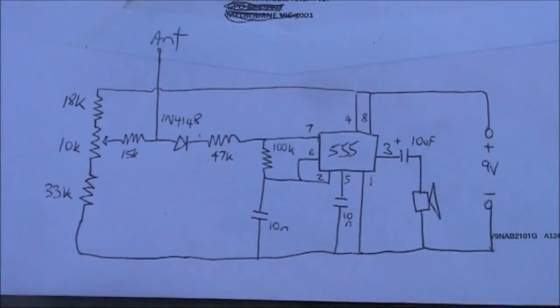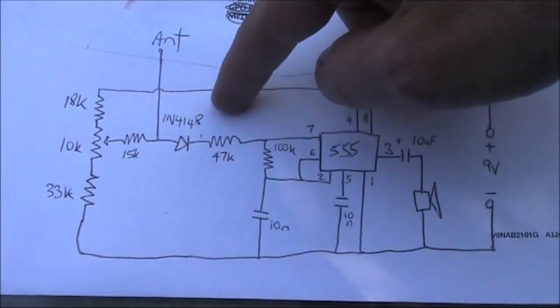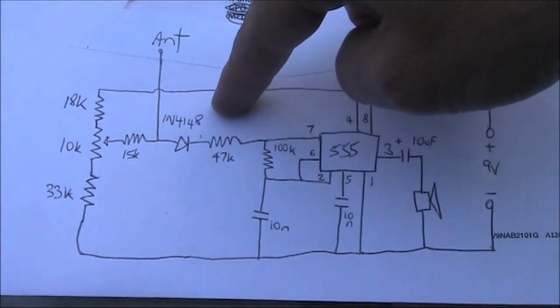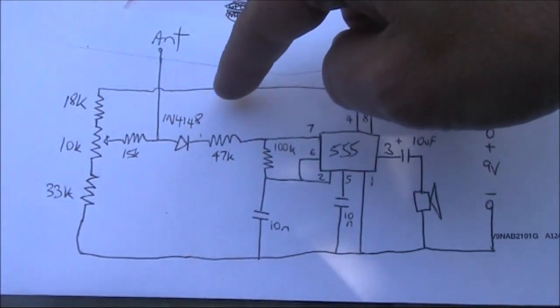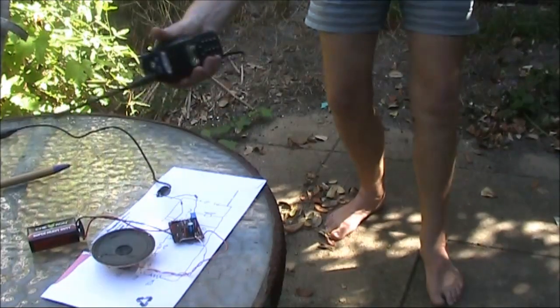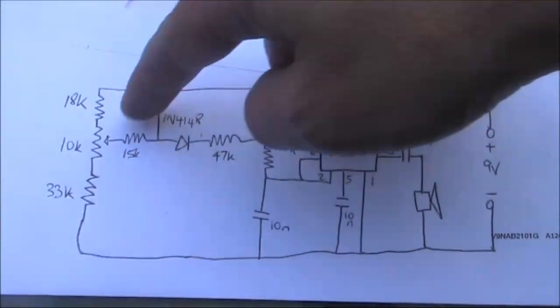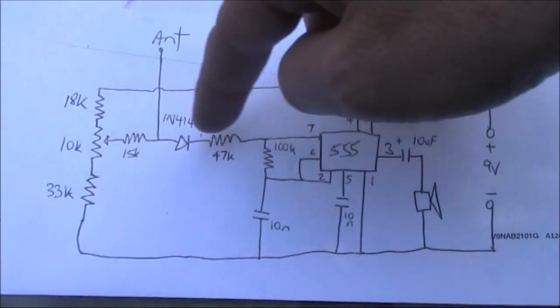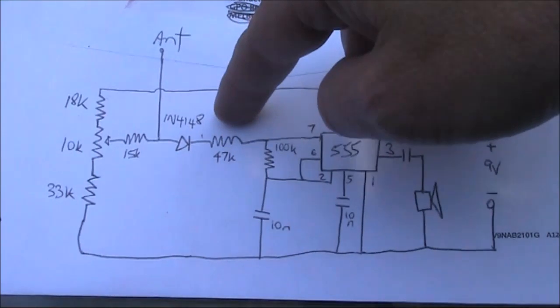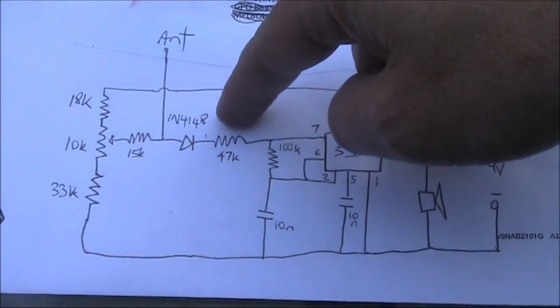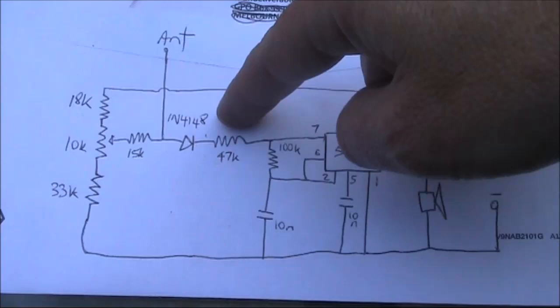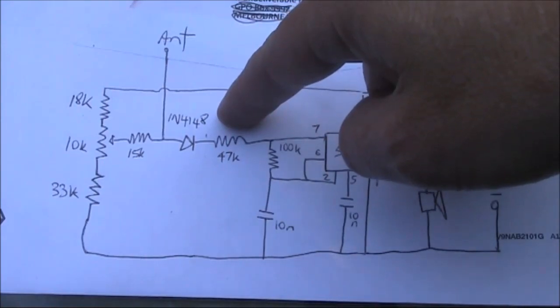Here's the circuit. It's the same as before, except I've got a 1N4148 diode and a 15k resistor. That 15k resistor and the 10k pot allows you to vary the bias on the 1N4148 diode. That means you can use the 1N4148 and not a germanium diode, which is a bit dearer and harder to get.